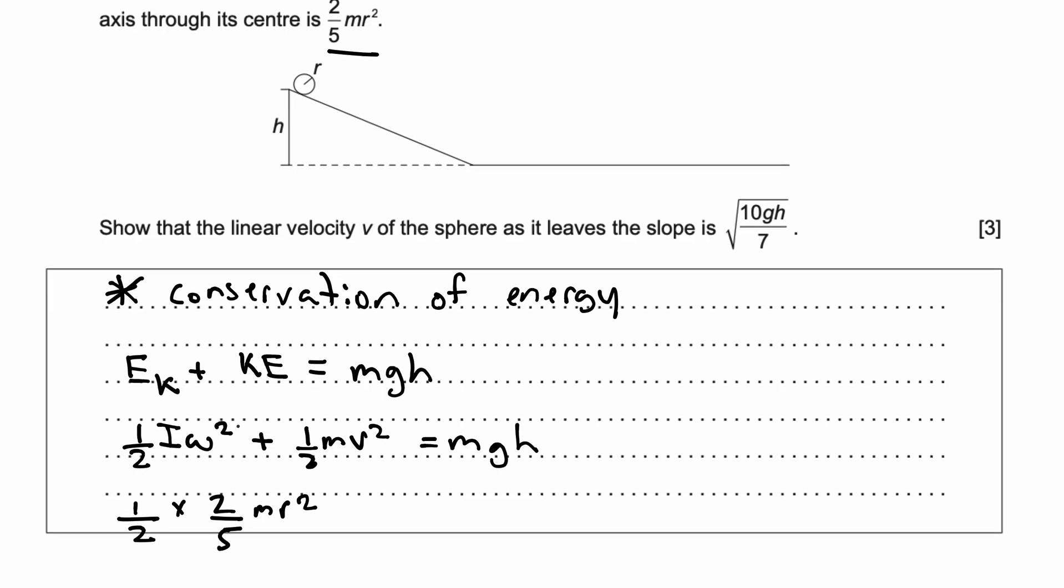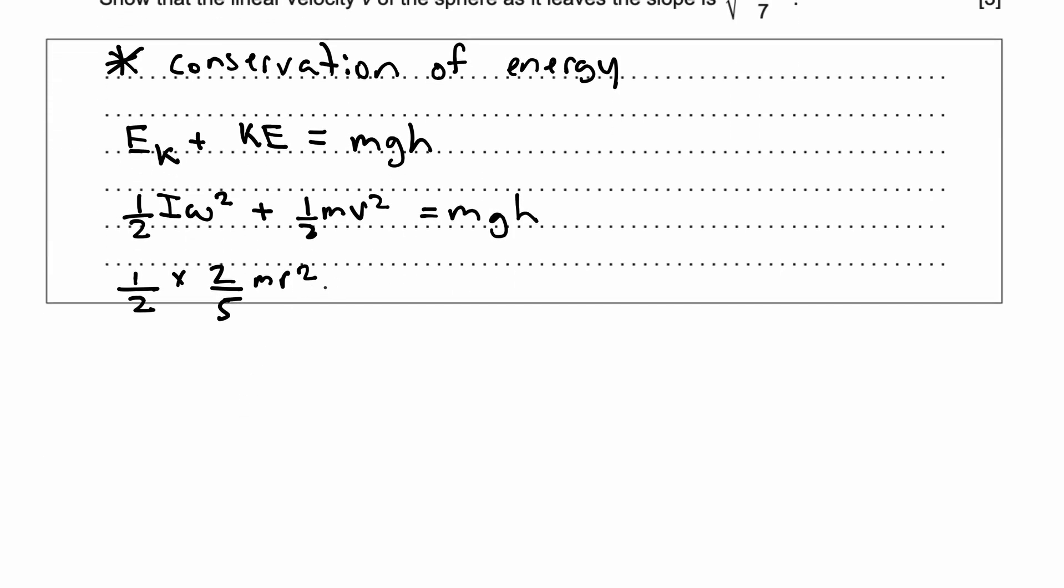So instead of ω, I can rewrite ω or angular velocity to be (v/r)². This is given in your data booklet. This is just an alternate way of writing angular velocity. Angular velocity can be equal to linear velocity over radius. So this is going to be my statement for my rotational kinetic energy.